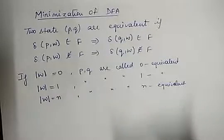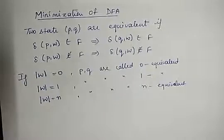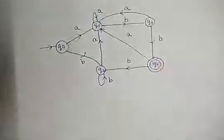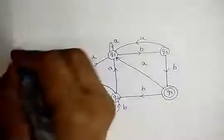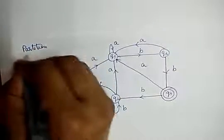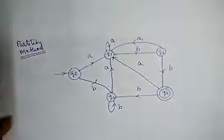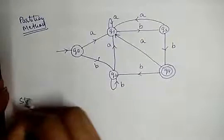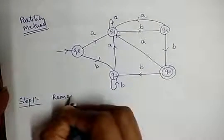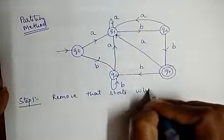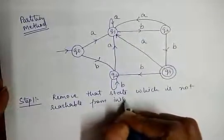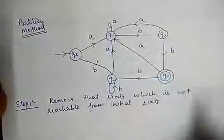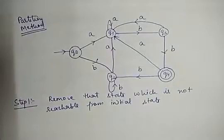We start with an example: suppose this is a DFA and we have to minimize or optimize it. We do minimization of DFA using a method called the partition method. The first step of the partition method is to remove any state which is not reachable from the initial state.